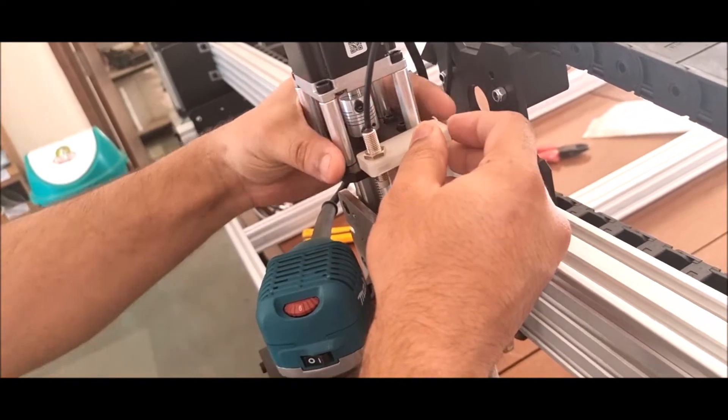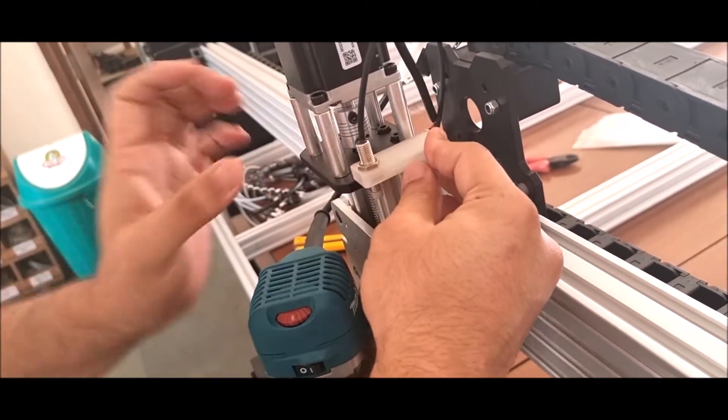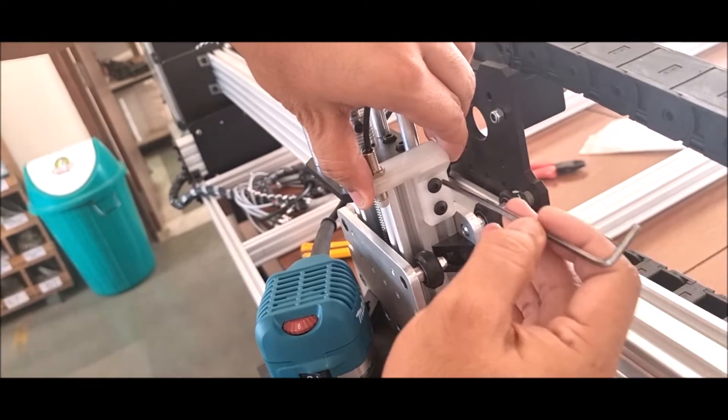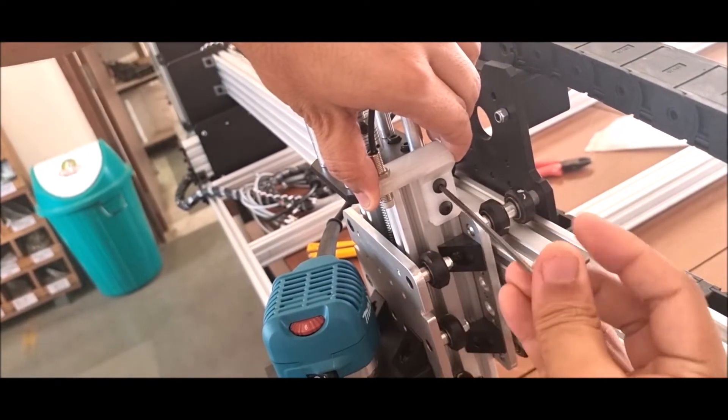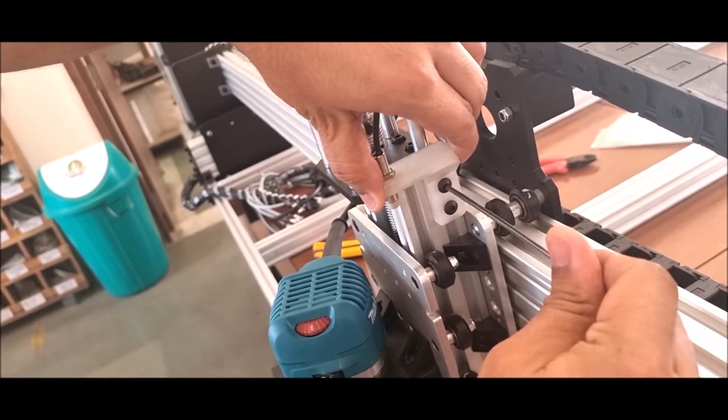against this plate. Push it against this plate and use the supplied M5 Allen key, then tighten these screws slightly.